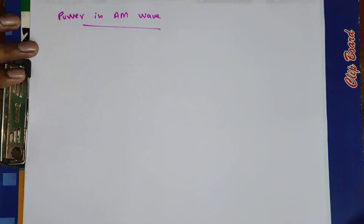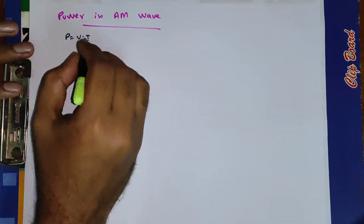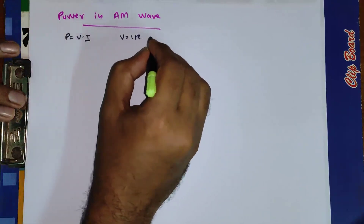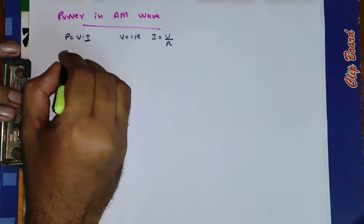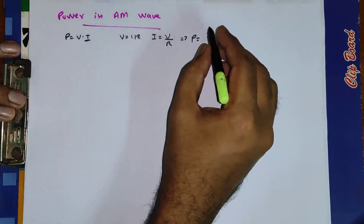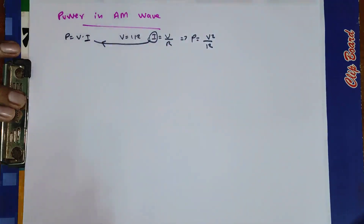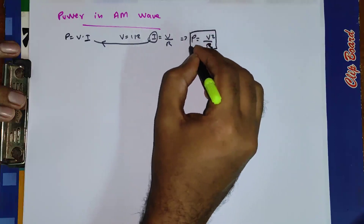We know that in any circuit the power dissipated will be equal to P equals V into I. Using Ohm's law V equals IR, so I equals V by R. Substituting, the power dissipated will be equal to P equals V square by R, where R is the resistance. So this is the starting formula.